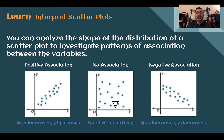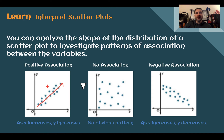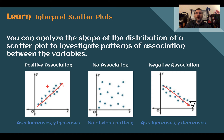Let's learn: Interpret scatter plots. You can analyze the shape of the distribution of a scatter plot to investigate patterns of association between the two variables. These associations go generally with slope. A positive association means the dots tend to go upward to the right — as x increases, y also increases, similar to a positive slope. No association means there's not really any obvious pattern — you can't tell if it's going upward, downward, straight across, or vertical. A negative association means as x increases, y decreases — going to the right, y is going down — similar to a negative slope.